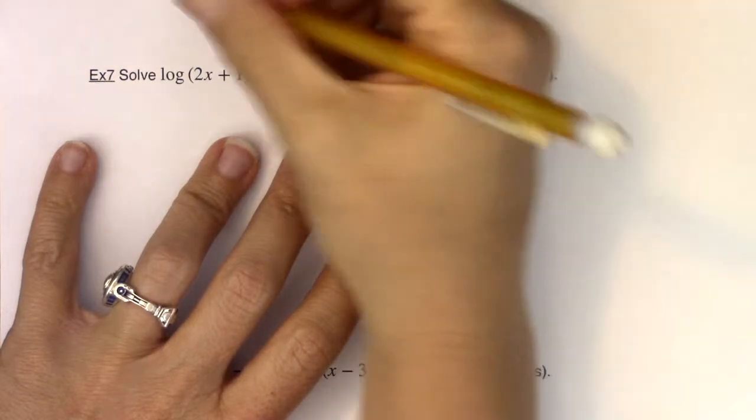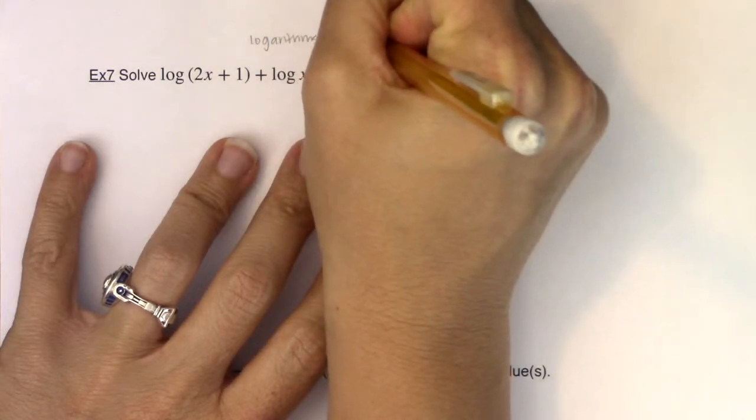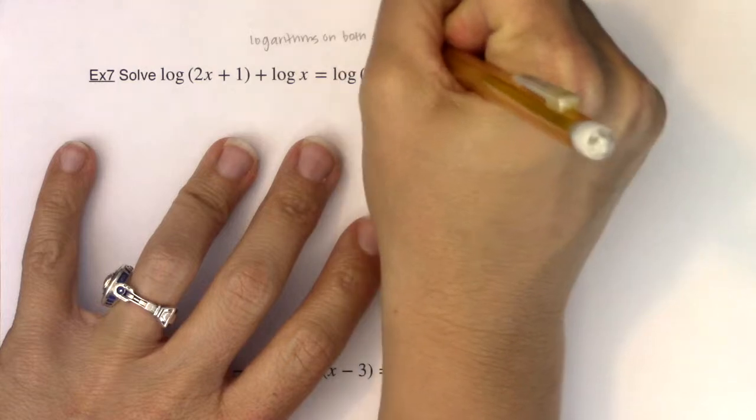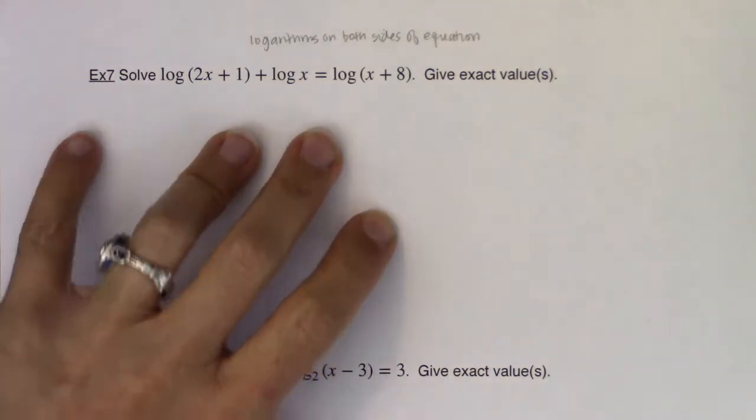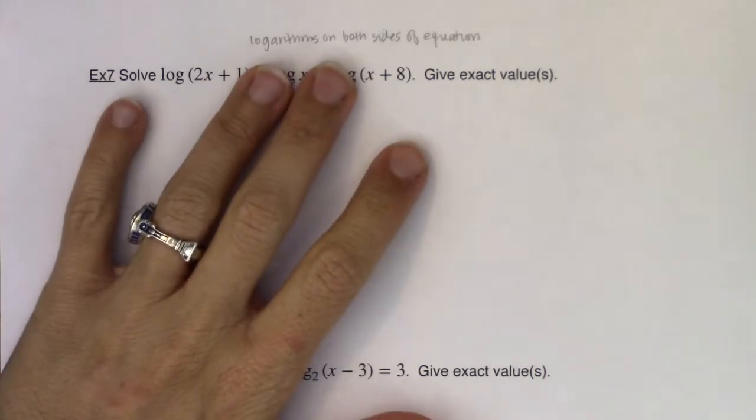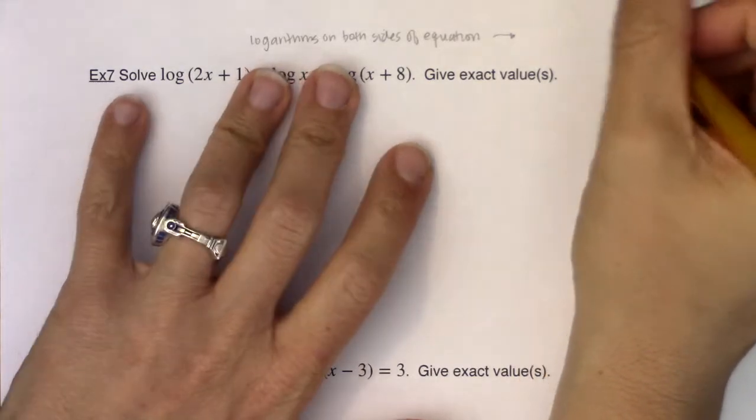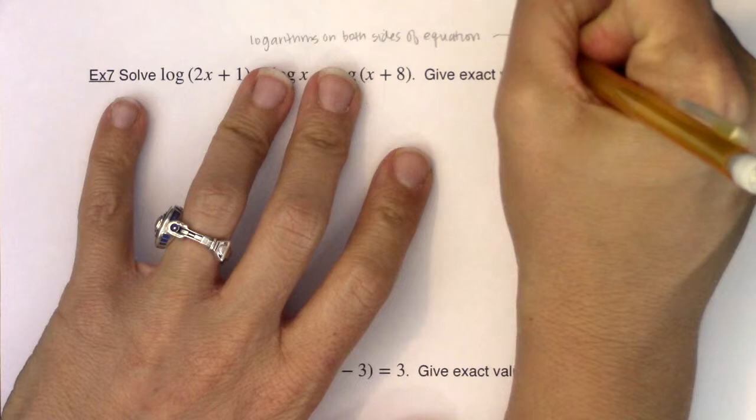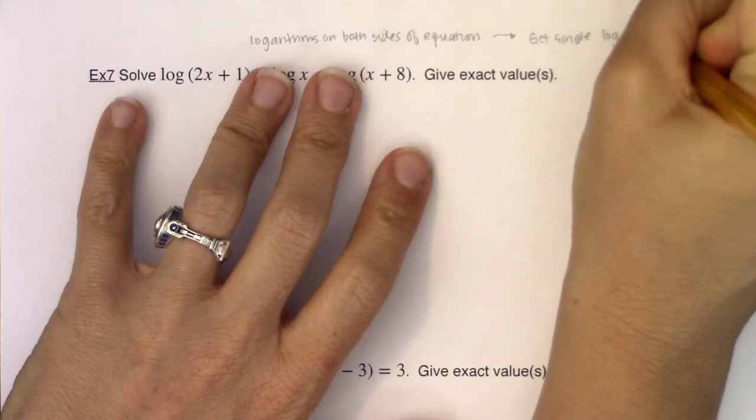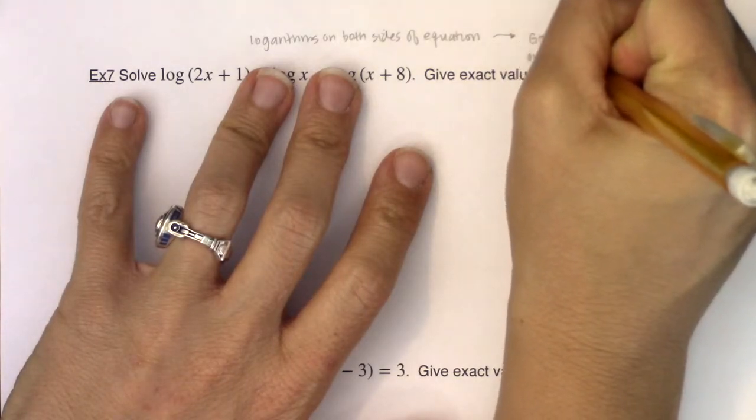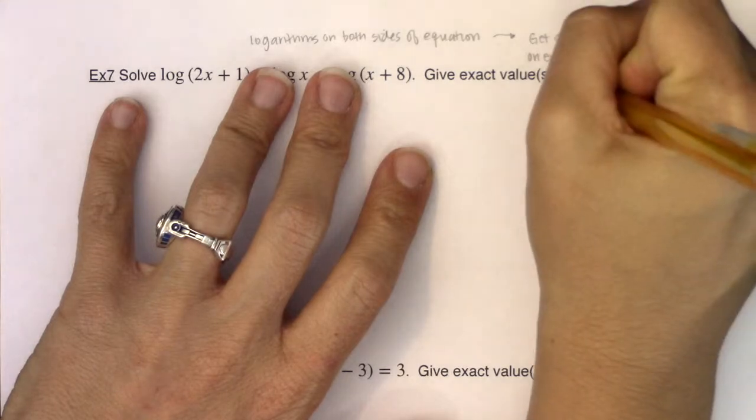So let me just write this down here. I have in this case logarithms on both sides of the equation and when you have logarithms on both sides of the equation the mechanics of solving this are that you want to get a single logarithm on either side of the equation and then set the arguments equal to each other. So let me write that down, get single logarithm on either side of the equation and set the arguments equal to each other.